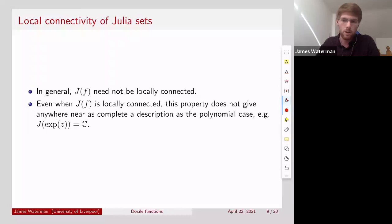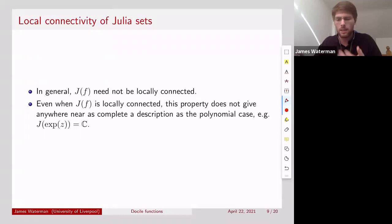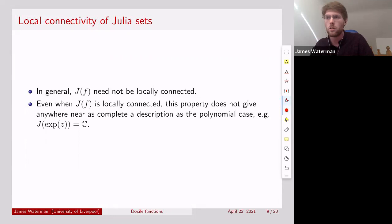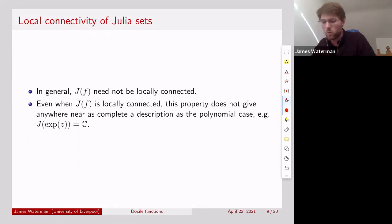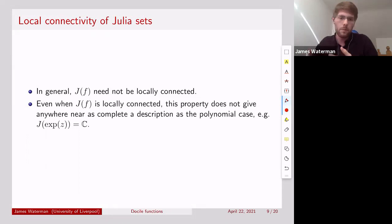Even when the Julia set is locally connected for a transcendental entire function, it being locally connected doesn't give us anywhere near as complete a description as what we had for the polynomial case. For example, the Julia set of the exponential function is the entire complex plane, but we don't get a real topological description of the dynamics just because the Julia set is the complex plane — we don't really learn anything too new. So which types of functions can we look at for which having local connectivity gives us a topological description of the dynamics as a quotient of a simpler system?